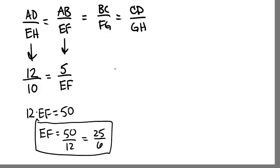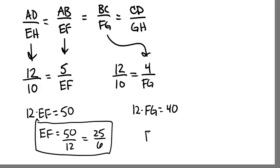We can then do the exact same process. Set the ratio of AD, 12 to 10, equal to the ratio of BC over FG. We know BC is 4, FG we don't know. We can cross-multiply to get 12 times FG is equal to 40. And now we know that FG is 40 over 12, which reduces down to 20 over 6, which reduces down to 10 thirds.